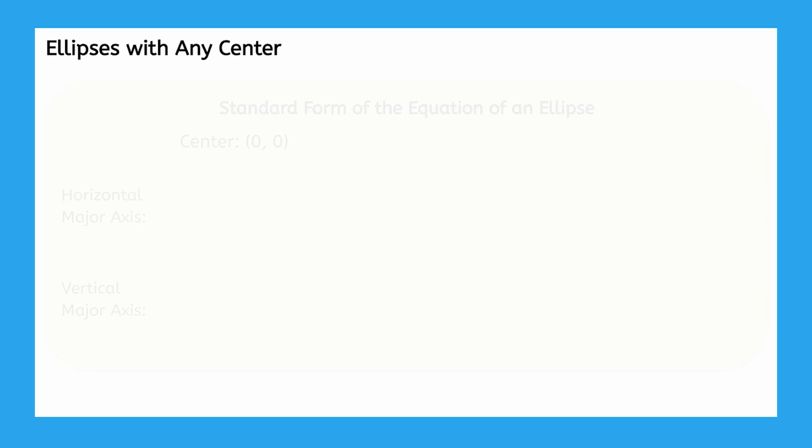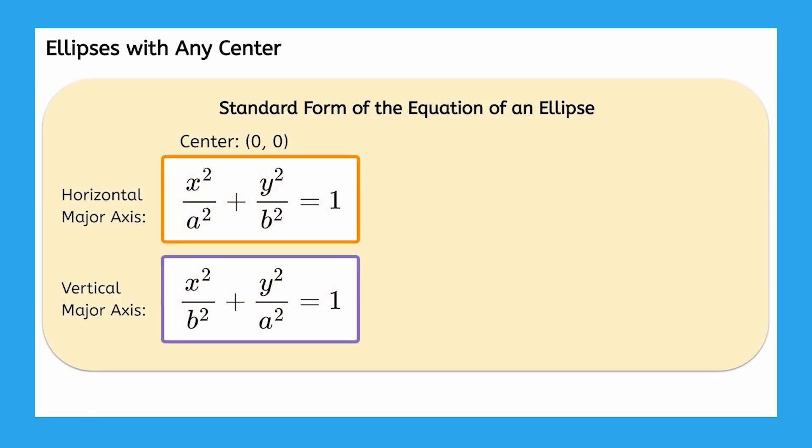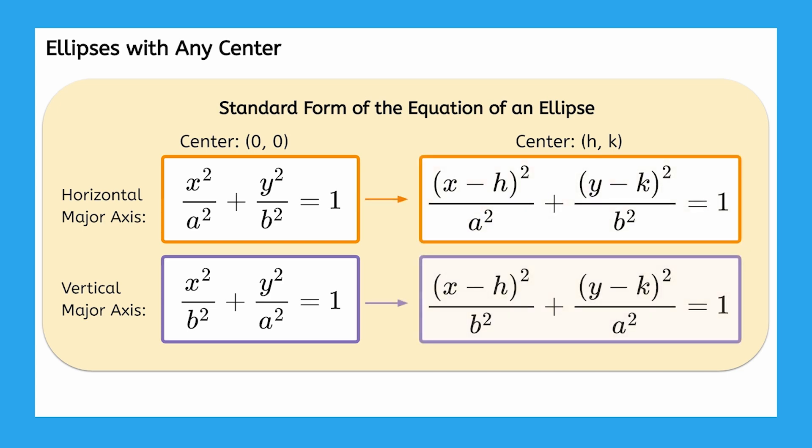In general, we can take the equations for ellipses centered at the origin we learned in our previous lesson and simply translate them to any center h, k, by subtracting h from x and k from y.